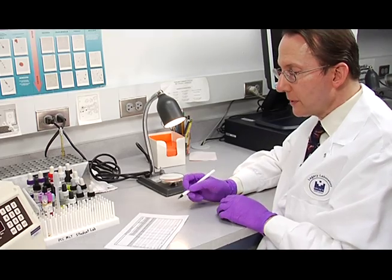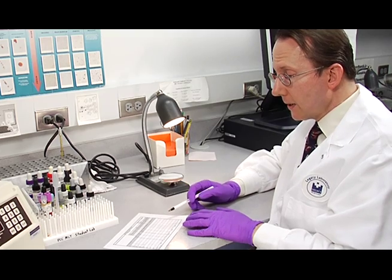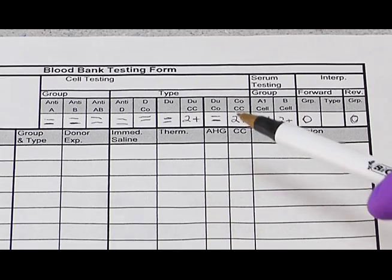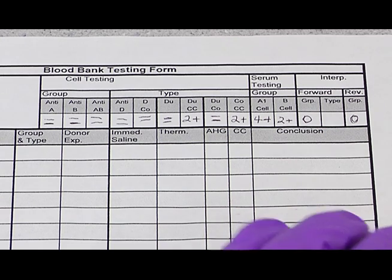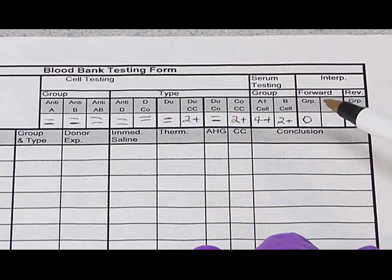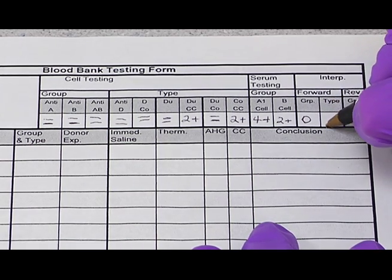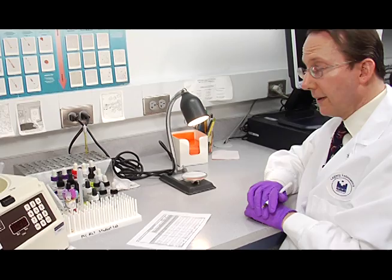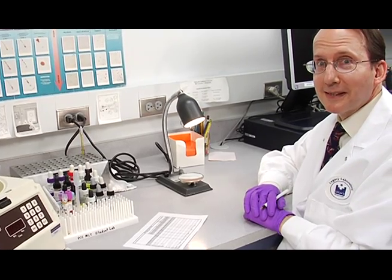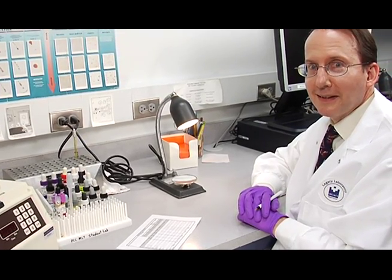So now let's look at our results from the DU testing. You can see that we got negative on the DU, and negative on the DU control. And we got 2 plus or greater for both of our check cell results. This confirms that we have an RH negative patient. So in the interpretation for the forward, under type, we're going to write NEG, abbreviation for negative. This concludes the DU testing and the ABO RH testing procedure.